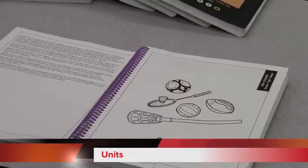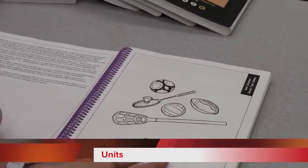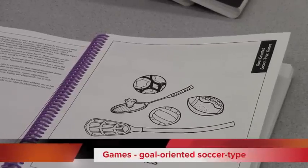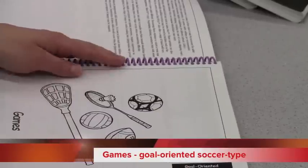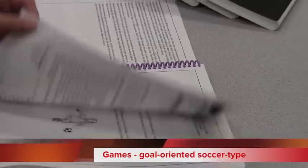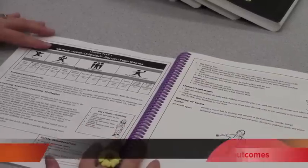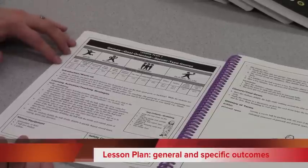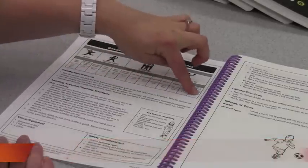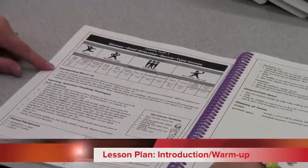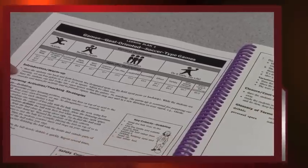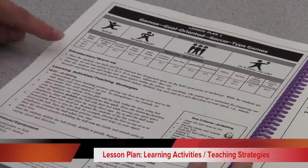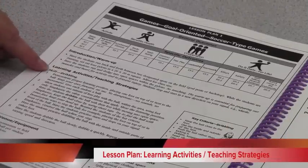Going through quickly, the first unit in the grade five year plan is games — specifically goal-orientated soccer-type games. When you open lesson one, what I love is that connection to the curriculum — specifically, what outcomes are we hitting. Here are our general outcomes, here are our specific outcomes. Then, as we talked about, it's really important to have that warm-up and cool-down, so it covers the warm-up right here, and then it goes into the learning activities. Every lesson is set up exactly the same: introduction warm-up, then the learning activities with teaching strategies.